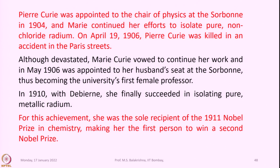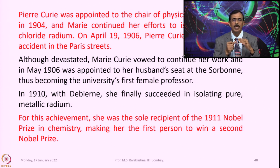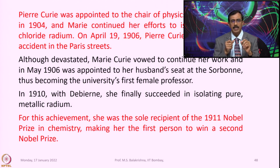Pierre Curie was appointed to the chair of physics at the Sorbonne in 1904, and Marie continued her efforts to isolate pure non-fluoride radium. On April 19th, 1906, Pierre Curie was killed in an accident in the Paris streets. Although devastated, Marie Curie vowed to continue her work, and in May 1906 she was appointed to her husband's seat at the Sorbonne, thus becoming the university's first female professor. In 1910, with de Bain, she finally succeeded in isolating pure metallic radium.